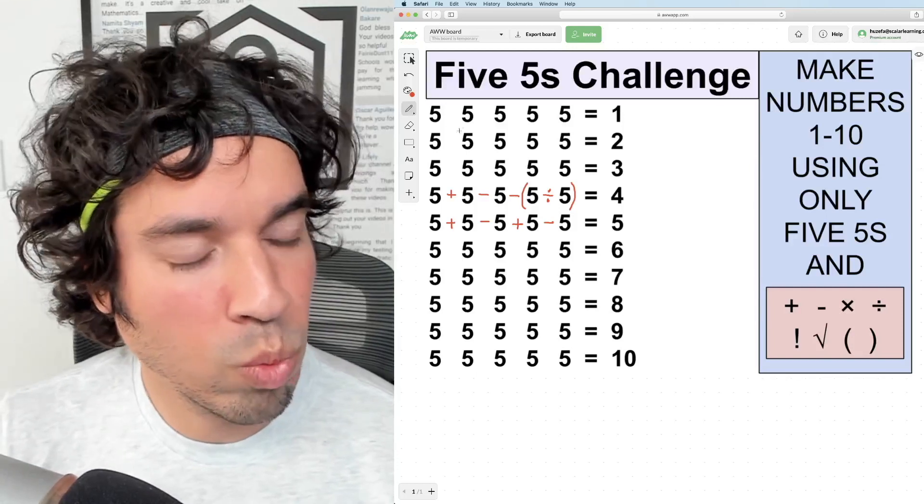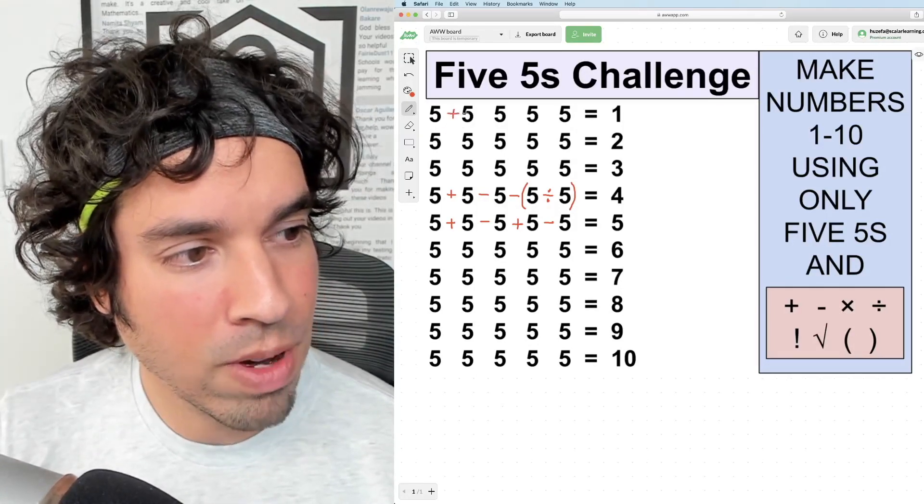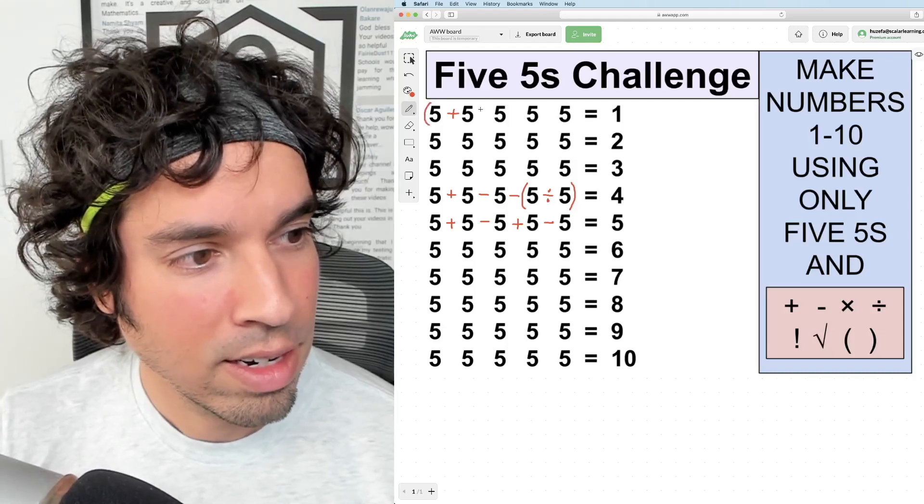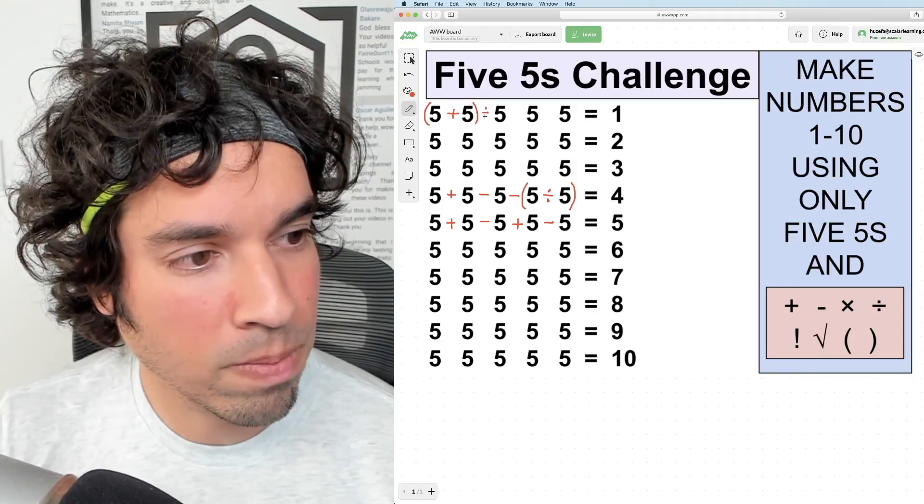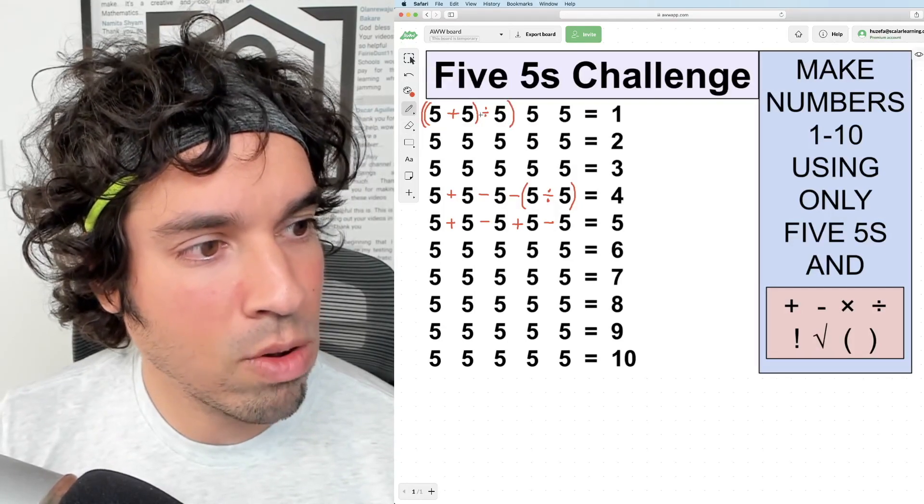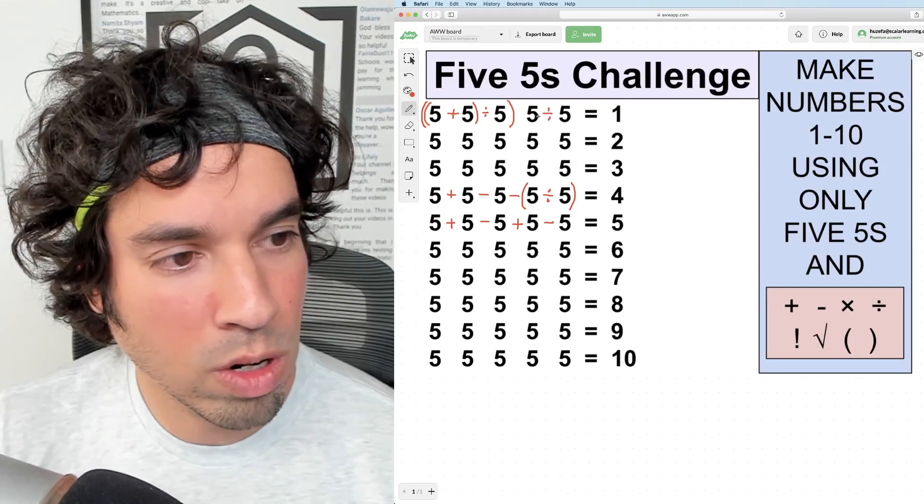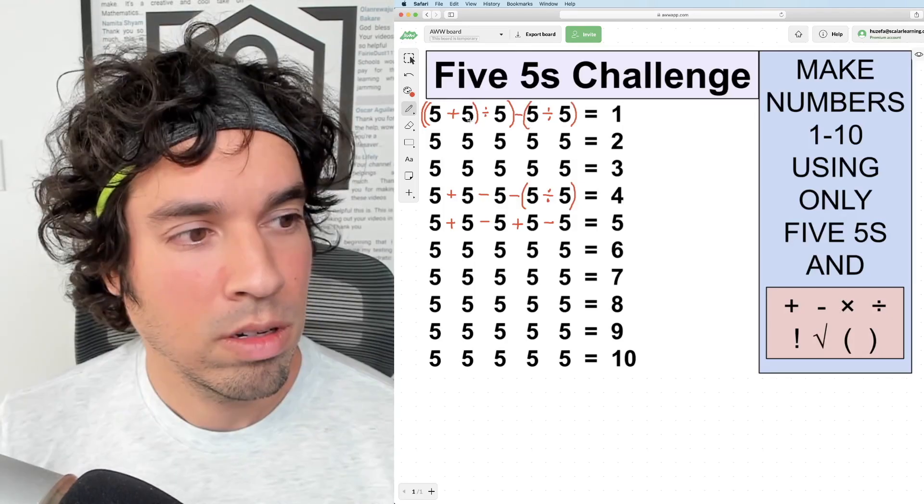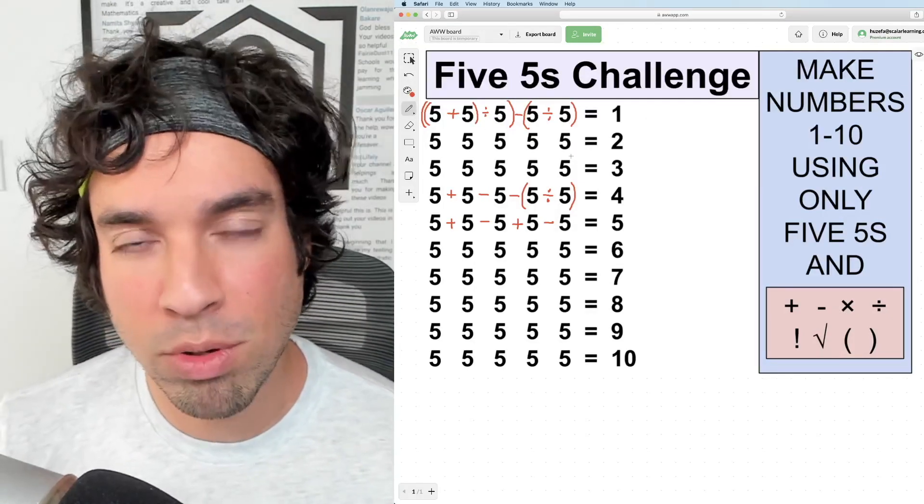Now let's move on to number one. So the way I'm going to set that one up is I'm going to say five plus five is ten. Then what I'm going to do is I'm going to divide that by five over here. Let's throw a double parentheses around this, because now I've got ten divided by five is two. All I need to do is turn these two guys into one. Five divided by five is one. Then we subtract these guys. I got two minus one is one.